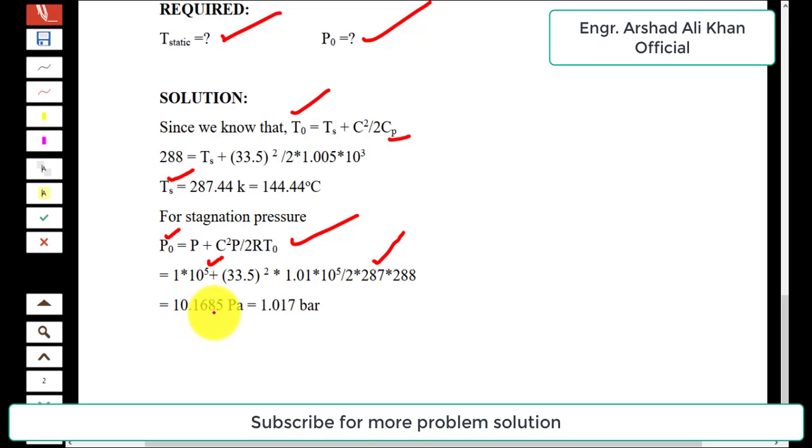We get 1.01685 × 10⁵ Pa, which in bar is 1.017 bar. This is the value of stagnation pressure. So this is all about the solution of Problem 10.7. If you like my videos, please subscribe to my channel to get other problem solutions as well. Thank you.